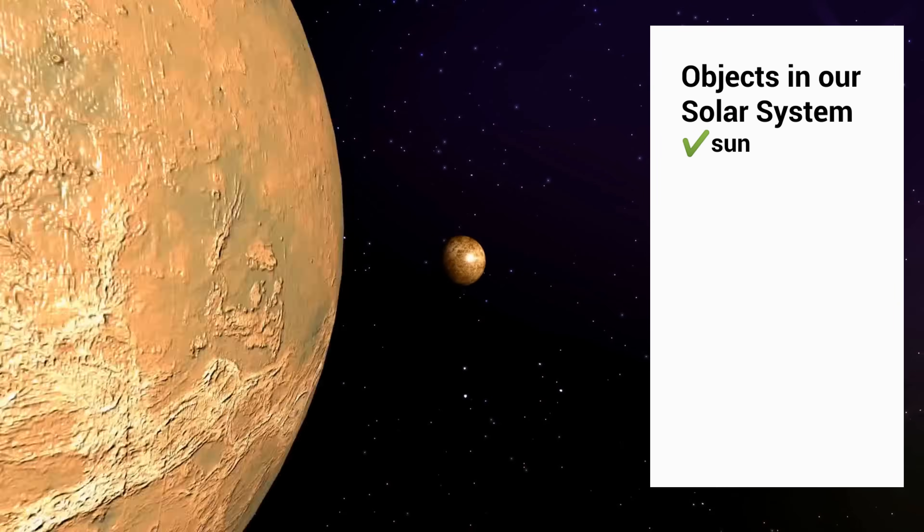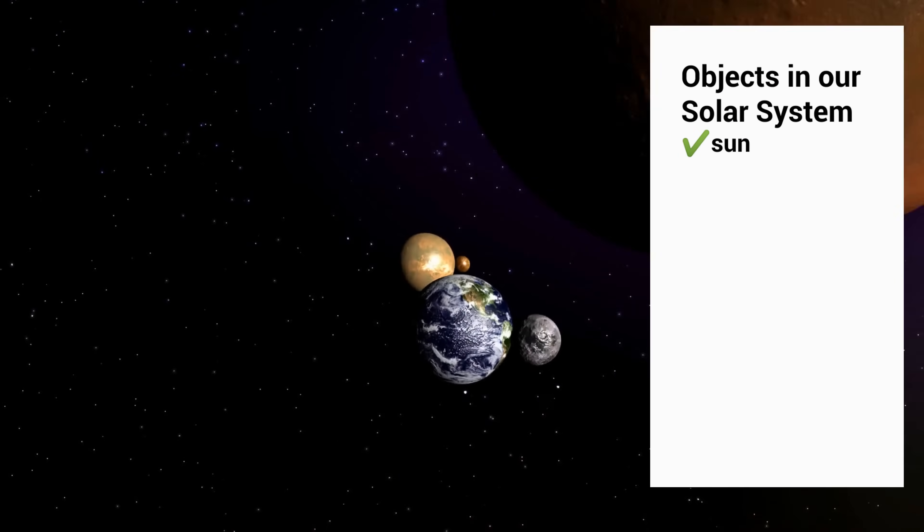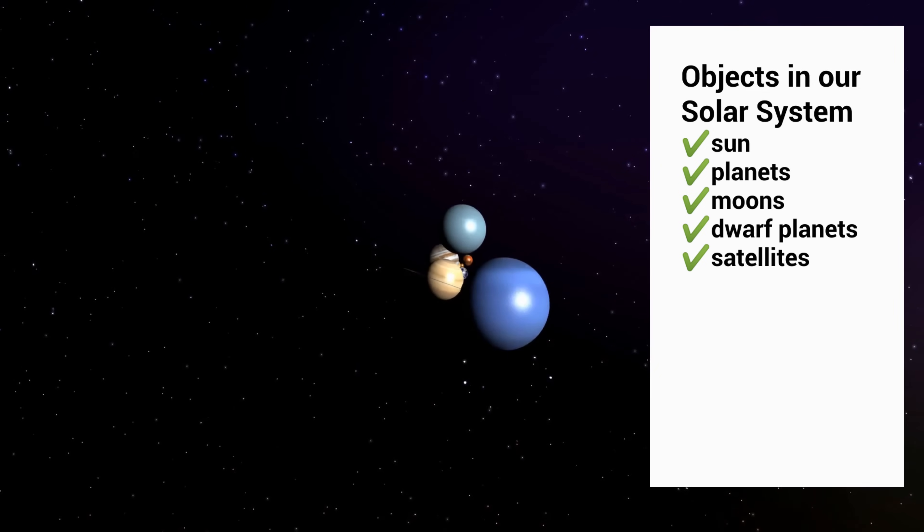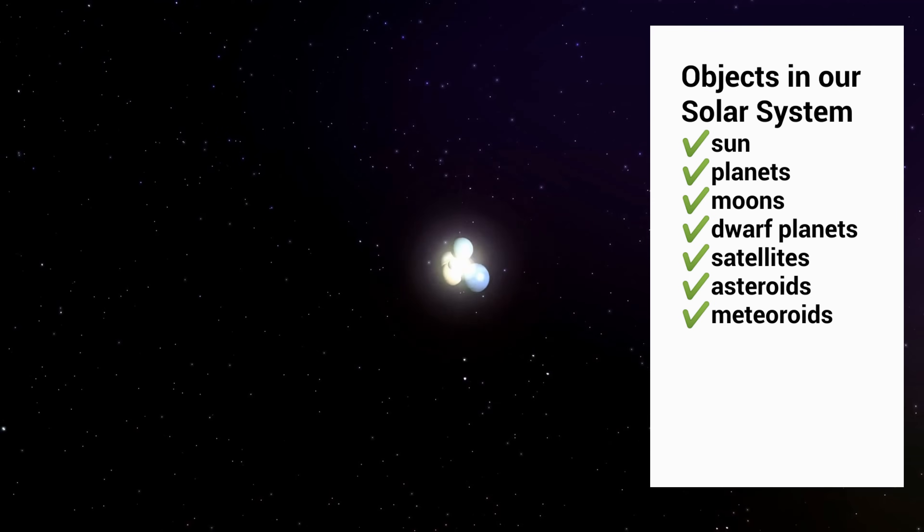Besides the sun, it includes other interesting things like planets and their moons, dwarf planets, satellites, asteroids, meteoroids, and comets.